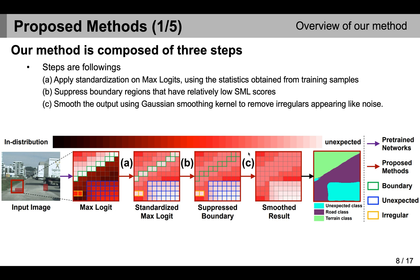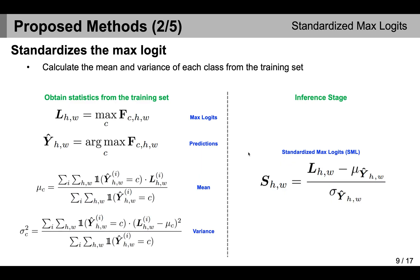Let's take a closer look at each step. For the first step, SML, we calculate the mean and variance of each class from the training set. Then, by using the statistics obtained from the training set, we standardize the max logit during the inference stage.